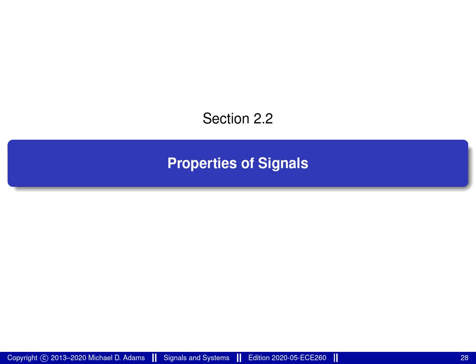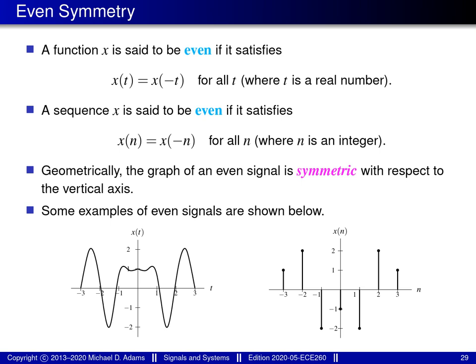In this section, I'm going to discuss a number of properties that signals can possess, such as symmetry and periodicity. Signals can possess a number of types of symmetry, and the first type of symmetry I need to introduce is what's known as even symmetry.